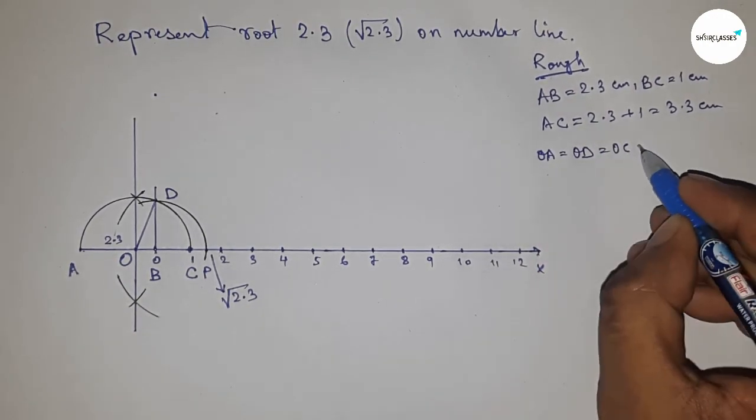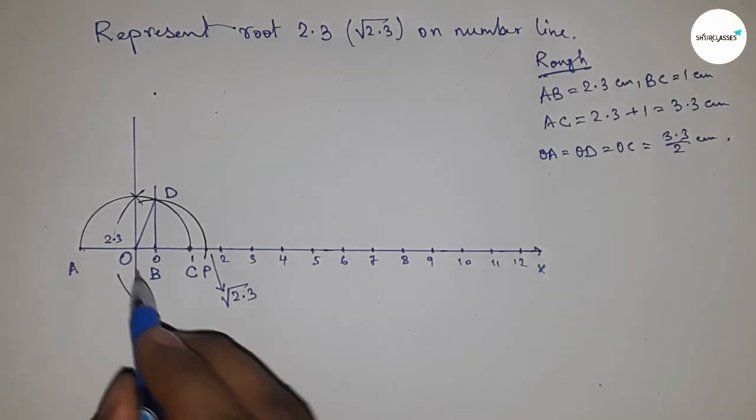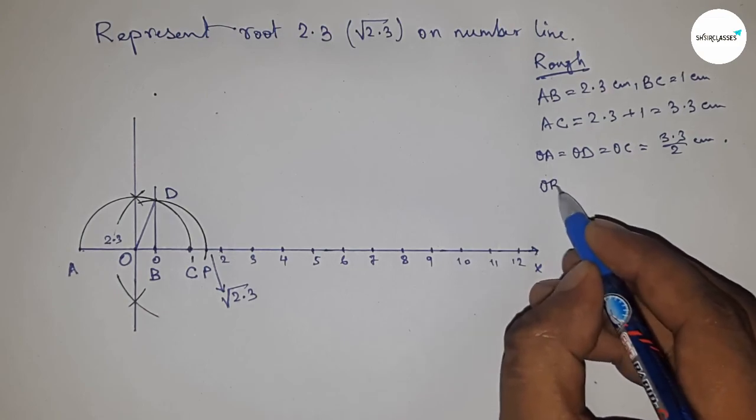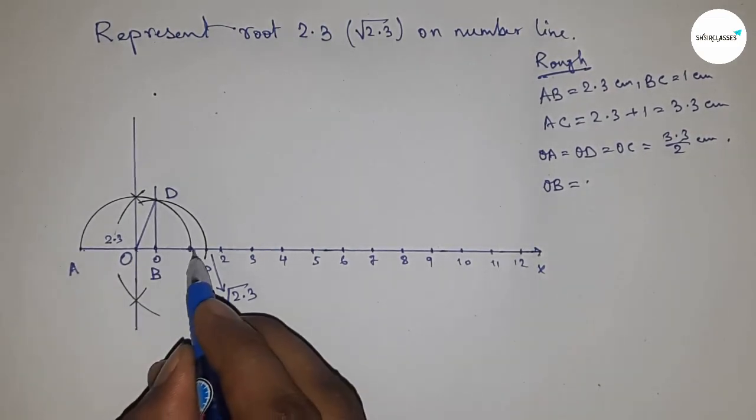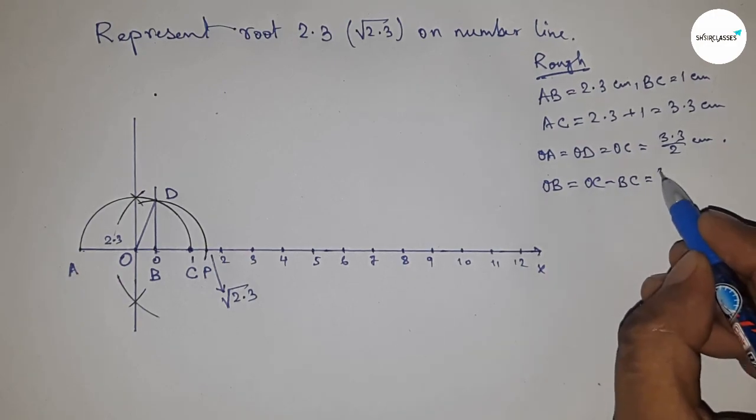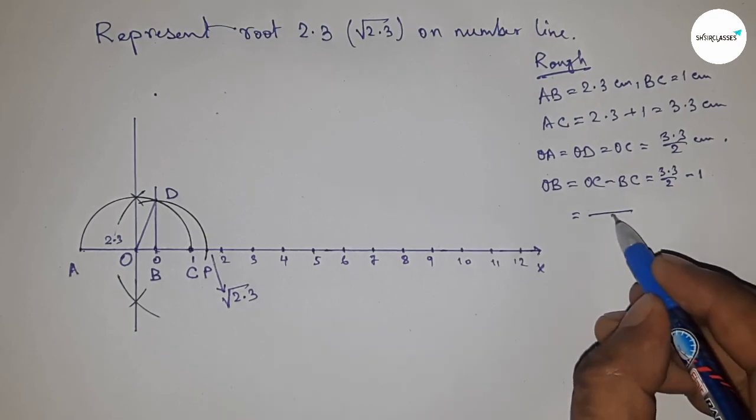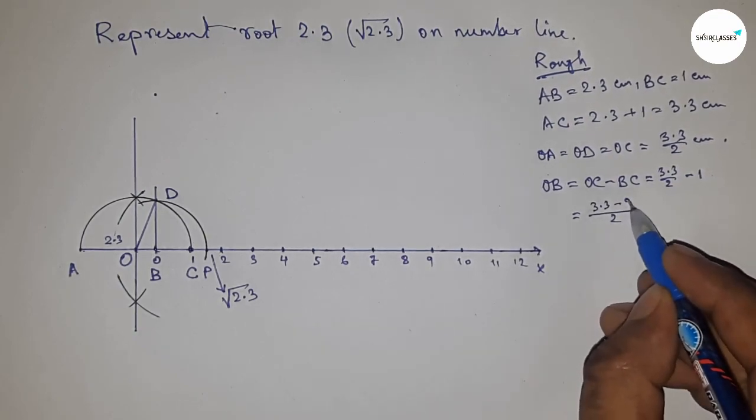The radius OA equals OD equals OC equals 3.3 divided by 2 centimeters. The distance OB equals OC minus BC. Putting the values and calculating, this is 1.3 divided by 2 centimeters.